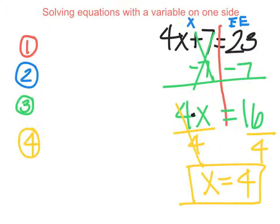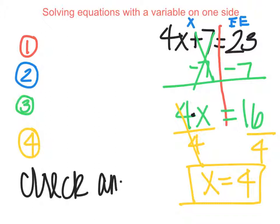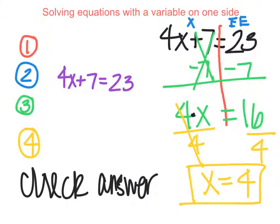Always remember to check your answer — plug it back in and see if it actually works. So we're going to go back up here. My original problem — I'm going to write this in purple — was 4x plus 7 equals 23. Instead of x, we're saying x equals 4. Since they're equal, they have the same value and I can trade them out, so we're going to put a 4 in there for x.